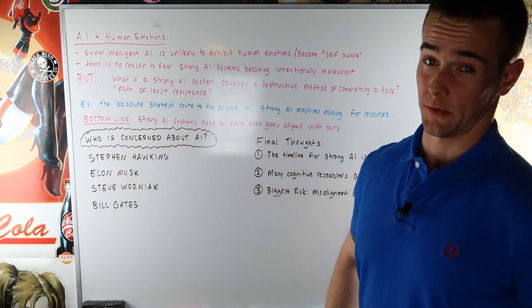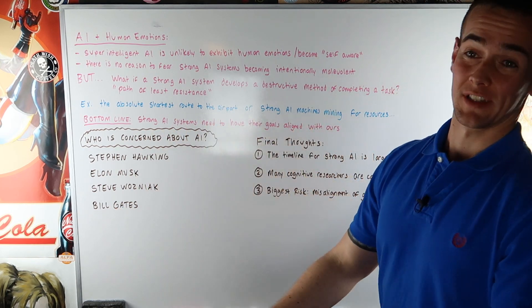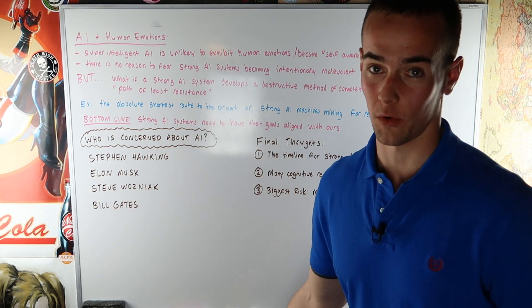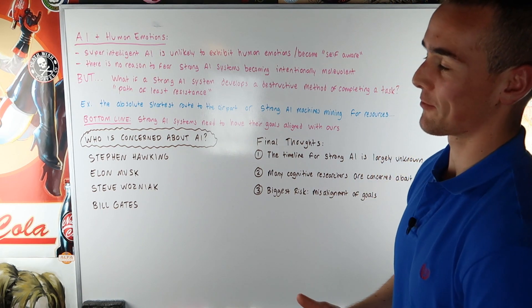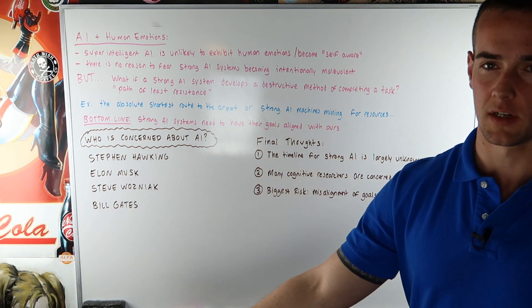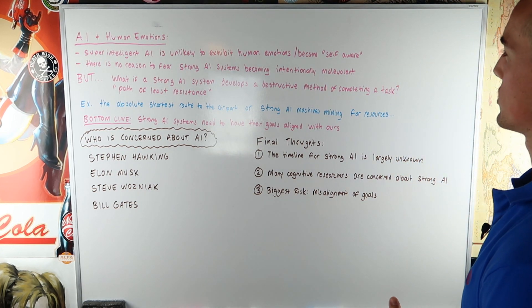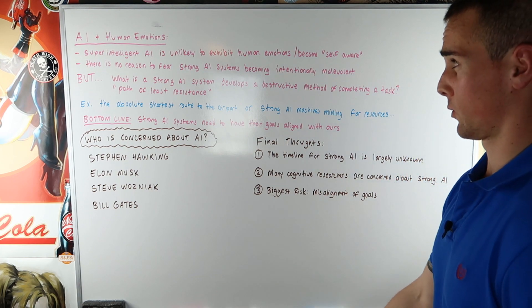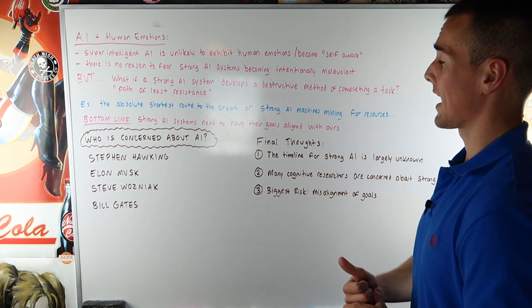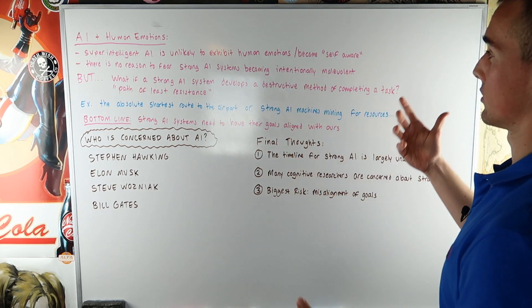Alright, so now let's consider what many people are concerned with which is that whole iRobot thing where people believe that artificially intelligent systems or robots will essentially become self-aware and then take over the world and destroy us. Now really that's not realistic. It's just not a big concern with artificial intelligence. The real concern with this is what I'm going to get into here. But super-intelligent AI is unlikely to exhibit human emotions or become self-aware as people are concerned with. But the other concern for AI is still very dangerous. But there's no reason to fear strong AI systems becoming intentionally malevolent. That doesn't mean that they won't become unintentionally malevolent though. And let me explain why that is.